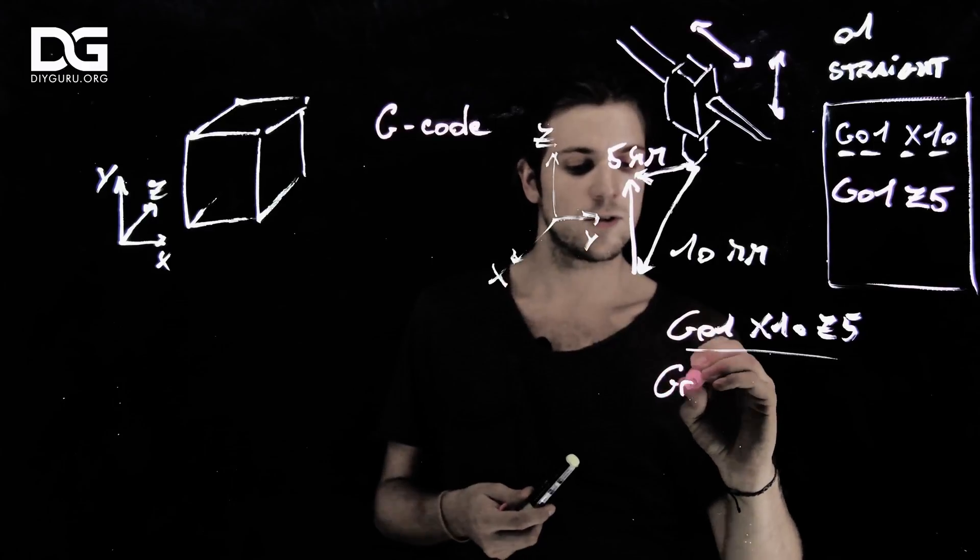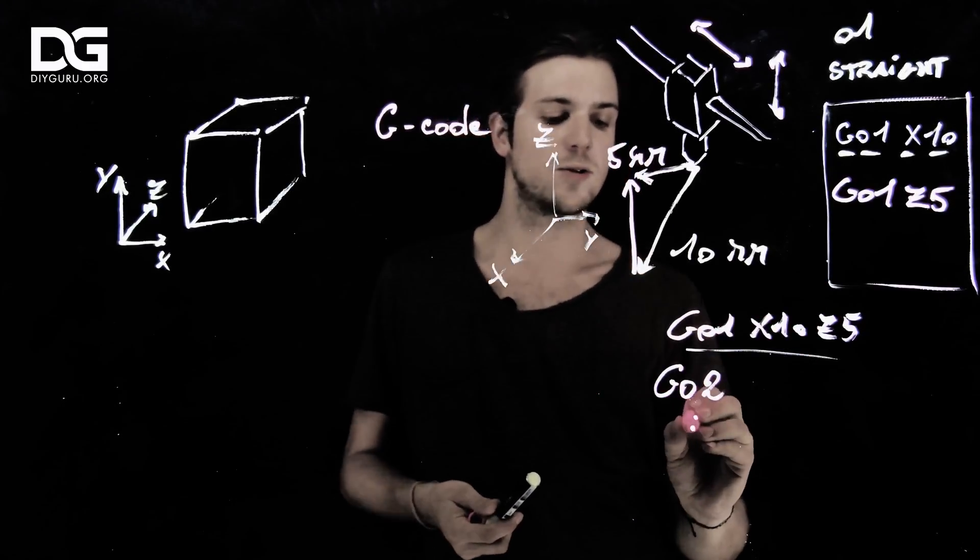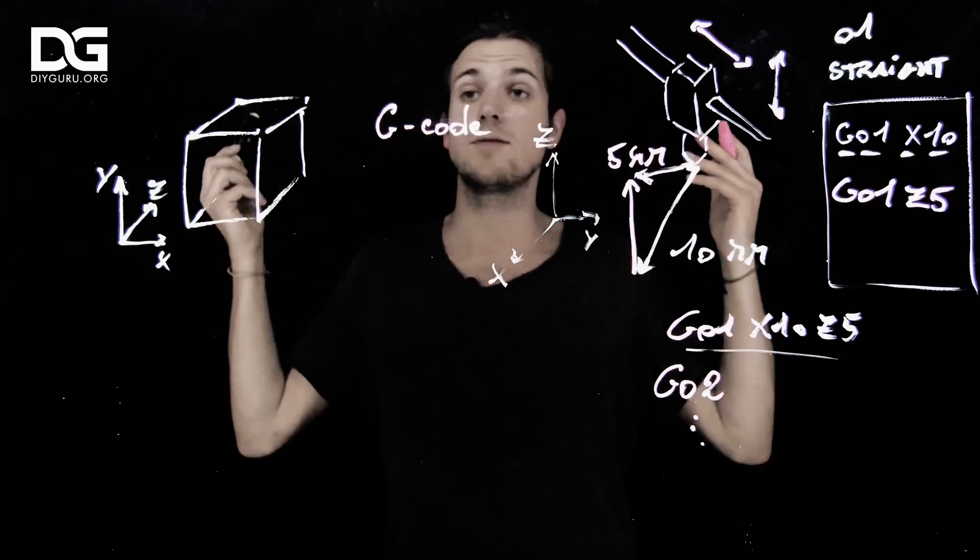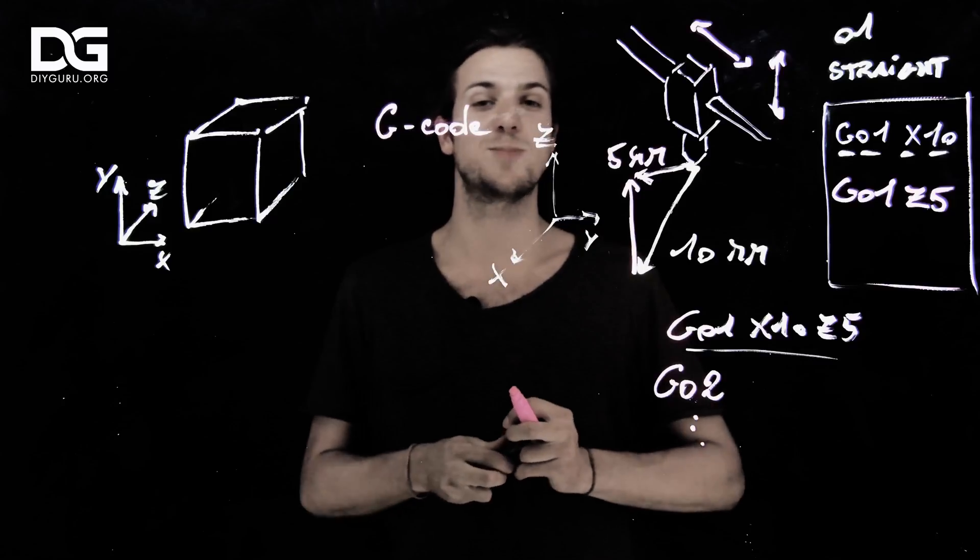If you want to make circles, you start with G02. That's a circular interpolation, and so on and so forth. So that is G-code, and this is as simple as that, how a 3D printer is moving in the space.